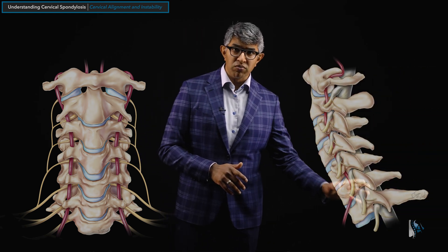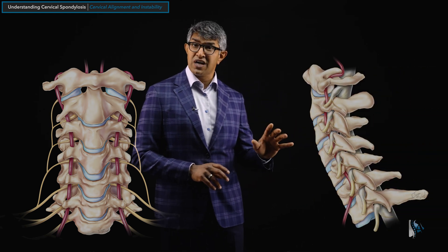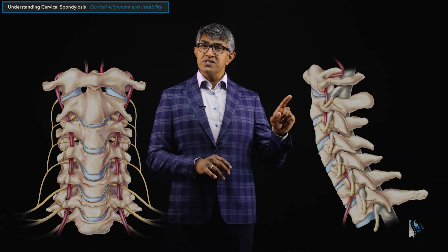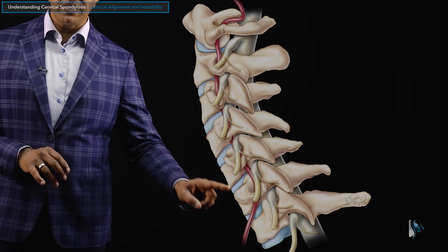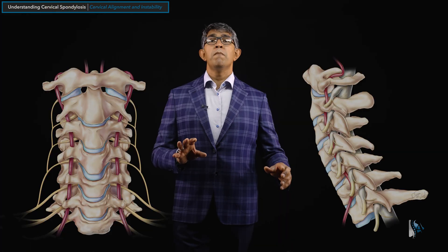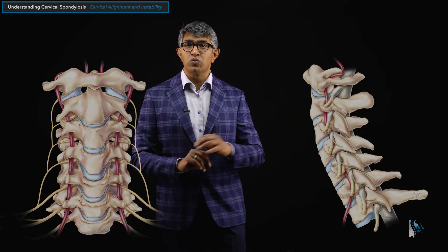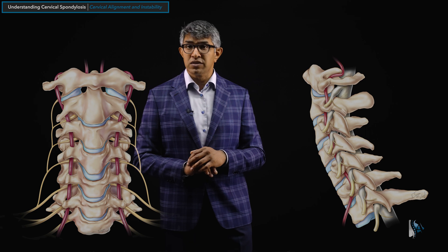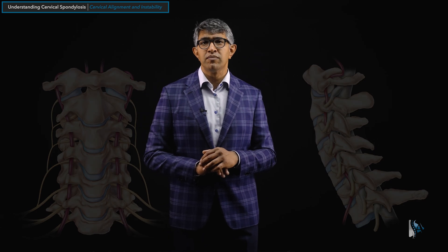And this is a picture of a normal cervical spine looking at it from the side. From the side, the cervical spine should have a bit of a curvature backwards, what's called lordosis. And we'll talk about that a little bit more as we go forward.